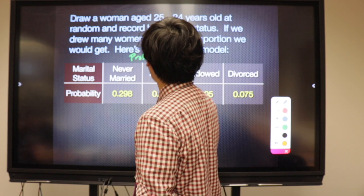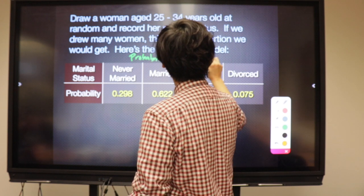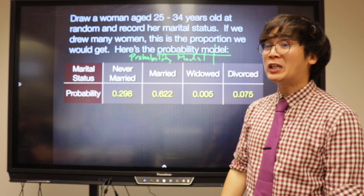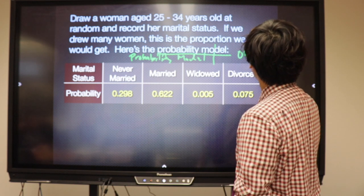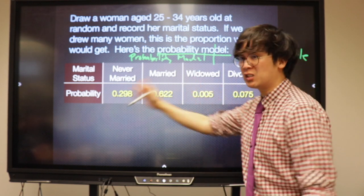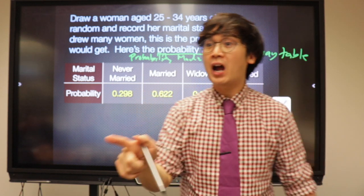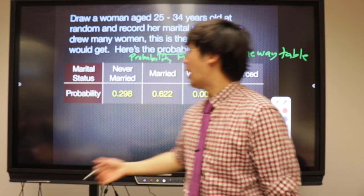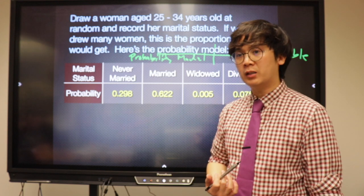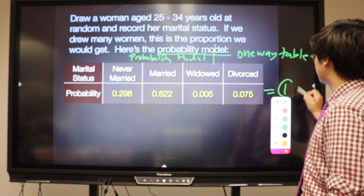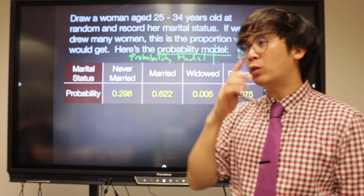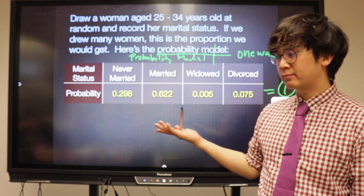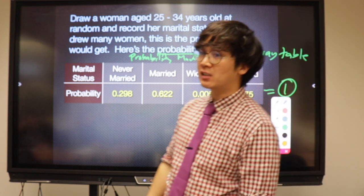This is called a probability model, also known as a one-way table. To verify if it's a legitimate probability model — a question in AP Stats — you add all the probabilities together, and if it equals 1 or 100%, then it is a legitimate probability model.